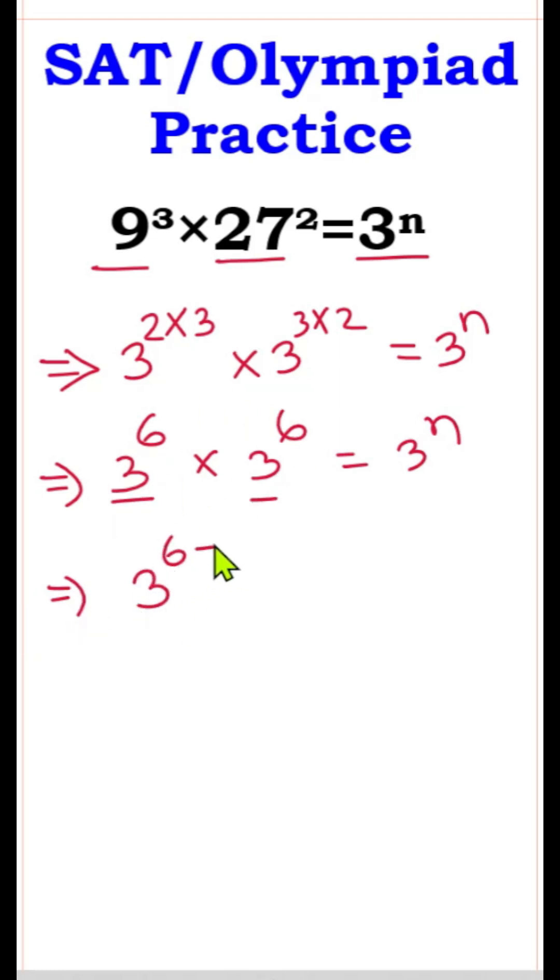It means 3 to the power 6 plus 6 equals to 3 to the power n. Now direct we can write here, base are same. Once base are same, power will be equal. So 6 plus 6 is 12, and equals to n. This is our answer. Thank you.